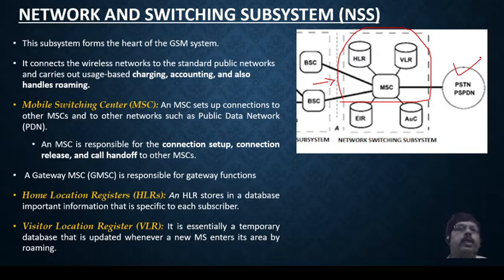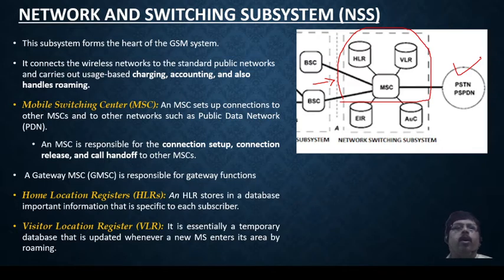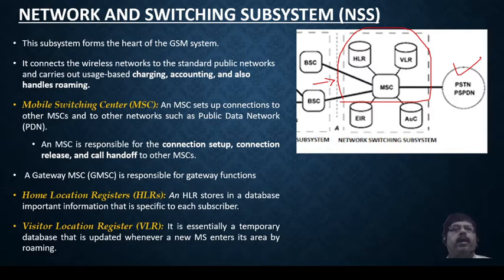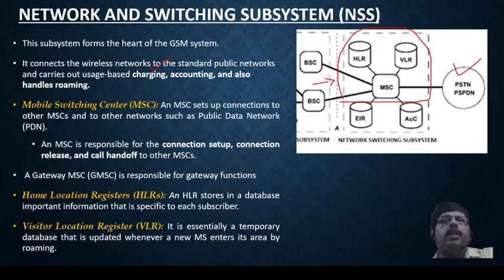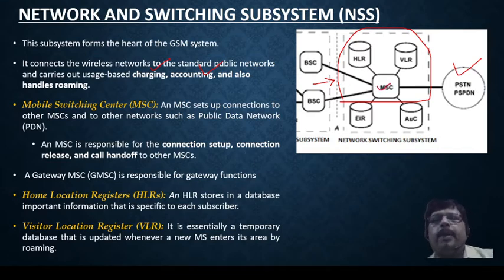The NSS carries out usage-based charging and accounting, and handles roaming. For example, if you take a 2 GB network plan, after 2 GB you are automatically disconnected. Previously, data usage was counted and charged per MB used — deducted from your voice or data balance. All these charging and accounting facilities are managed in the NSS. Now let us discuss MSC and roaming.